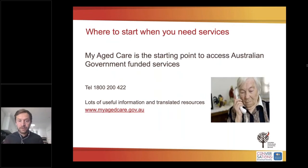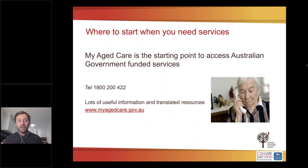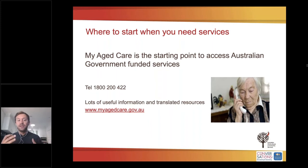Where to start? My Aged Care is the starting point to access government funded services. You can contact My Aged Care in two ways: by calling the My Aged Care phone line on 1-800-200-422, or via the My Aged Care website where you can send referrals directly. The website is also a great resource containing useful information about government subsidised aged care services.